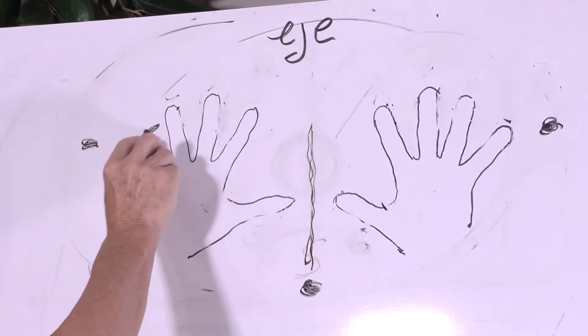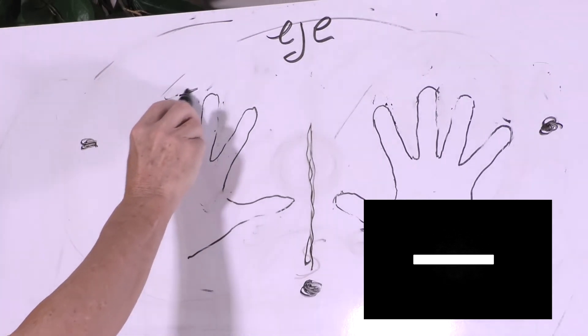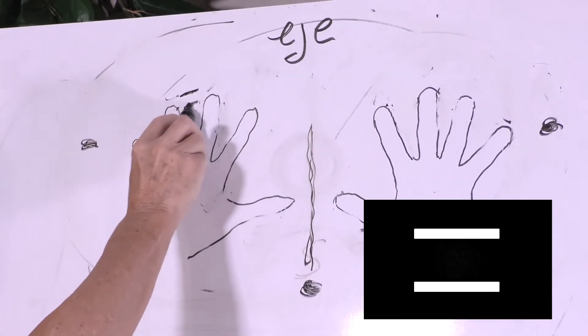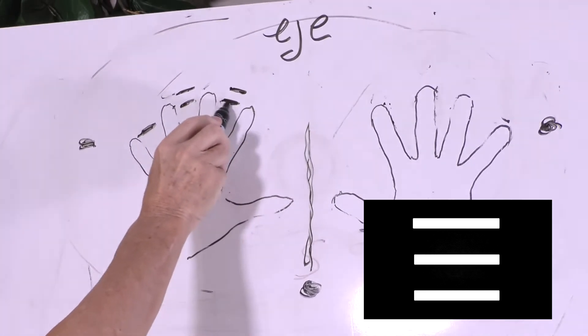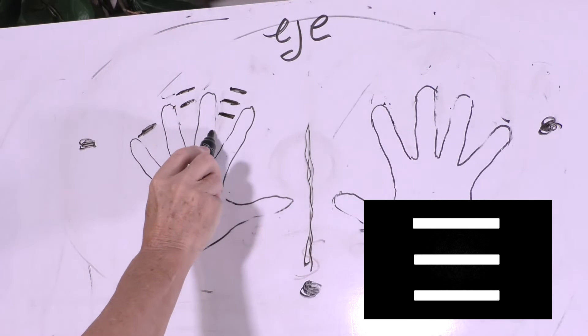One line between the little and the ring finger as the first space, two lines between the ring and middle finger as the second space, and three lines between the middle and the index finger as the third space.